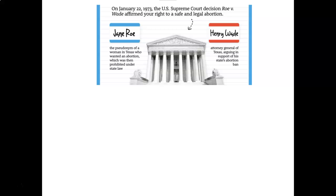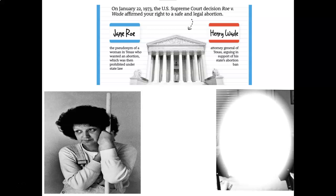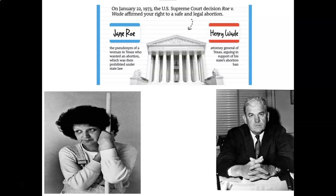Roe v. Wade is about a lady who uses the pseudonym Jane Roe so that her identity could be protected. She attempts to have an abortion in Texas. However, Texas only allows abortions if your life is in danger or in cases of rape. She initially claimed rape, but changed her story when that wasn't true, and when they found out she was not raped, they would not give her an abortion. Henry Wade is the attorney general of Texas and the district attorney for Dallas, and he is the one upholding the law in Texas. This is Norman McCorvey, otherwise known as Jane Roe, and this is Henry Wade, the district attorney.